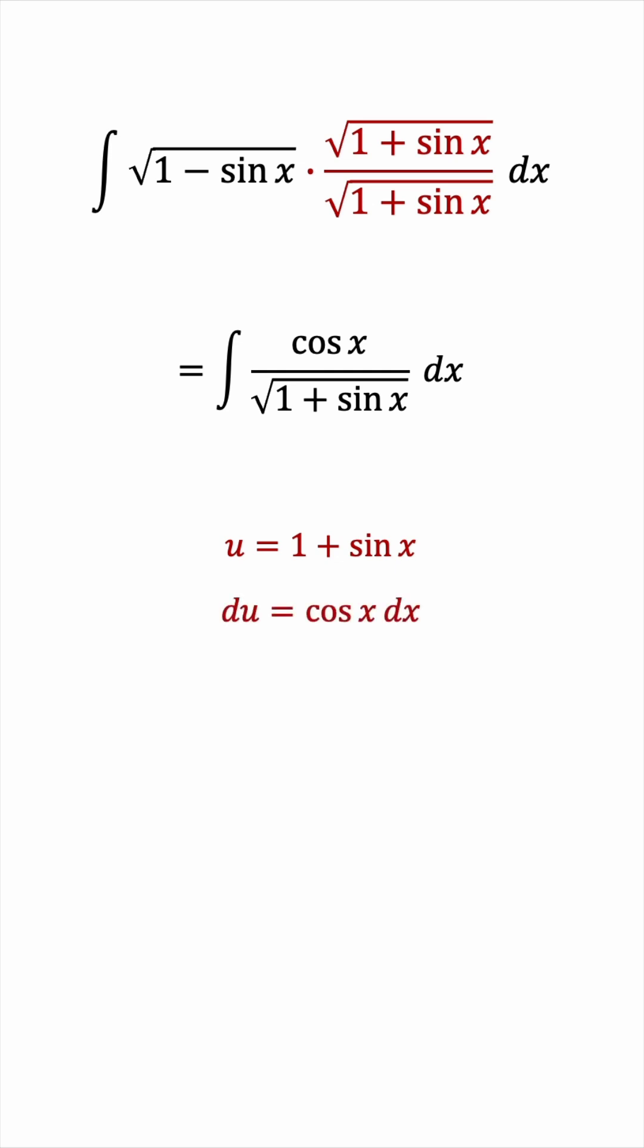du will be cosine x dx anyway. So it just simplifies things. The integral will become du over the square root of u.